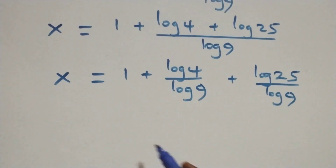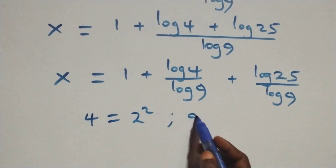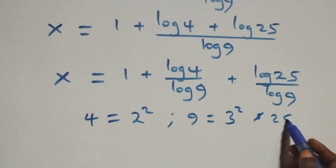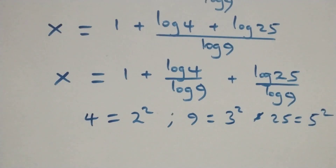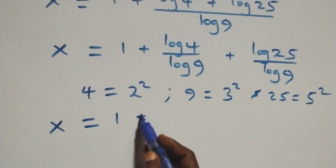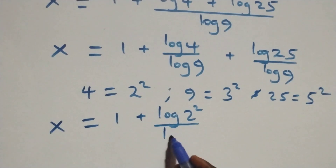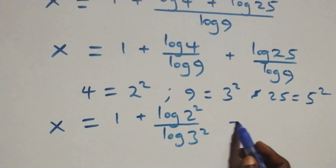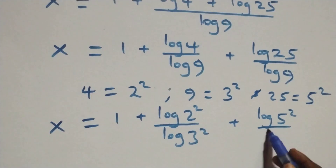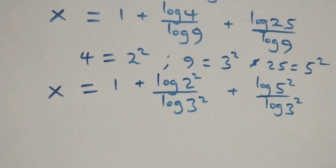Here we can rewrite 4 as 2 squared, also 9 as 3 times 3 — that's 3 squared — and 25 as 5 times 5 — that's 5 squared. So all we have becomes x equals to 1 plus (log 2² over log 3²) plus (log 5² over log 3²).